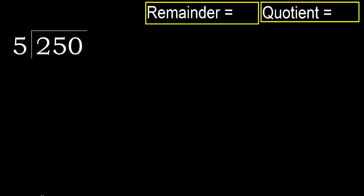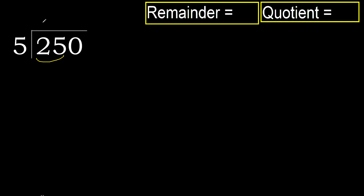250 divided by 5. 2 is less, therefore next. 25 is not less. With 25, 5 multiplied by which number is nearest to 25 but not greater? 5 multiplied by 6 is 30, and 30 is greater. 5 multiplied by 5 is 25, and 25 is not greater.